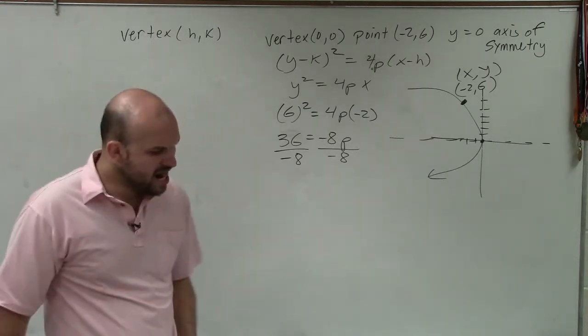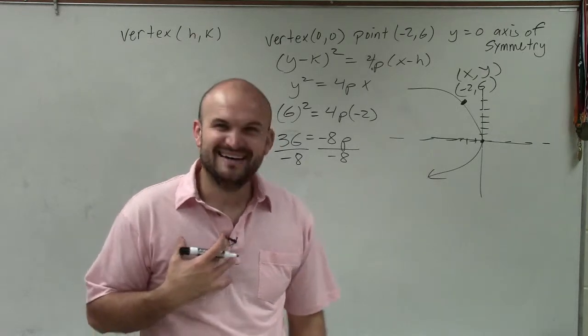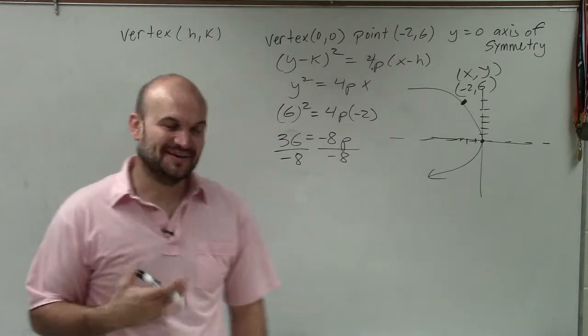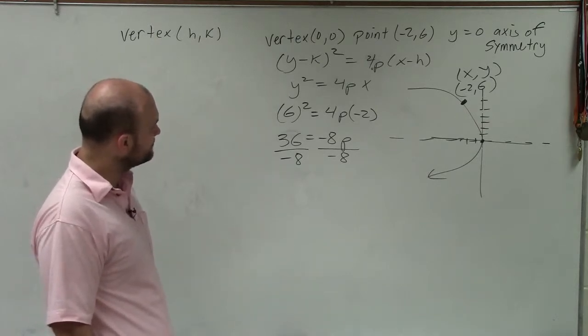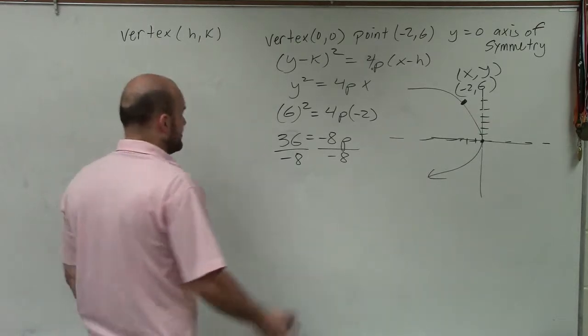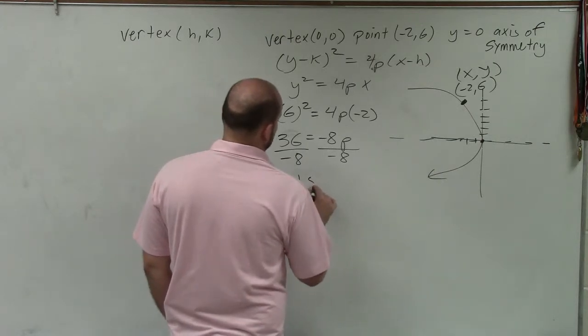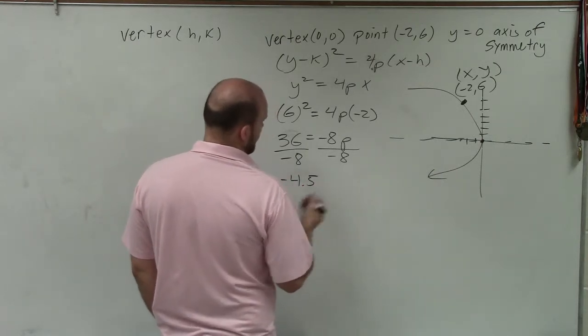Divide by negative 8. And I get 36 divided by negative 8. Let's see. It goes into 32. So that'd be 4.5, or 4 and 1 half.